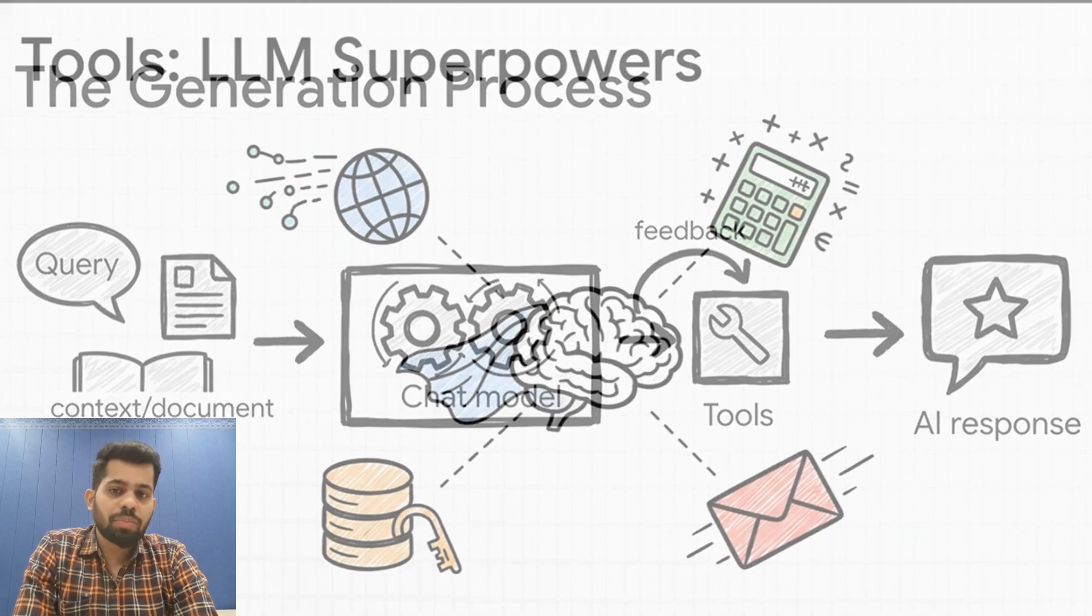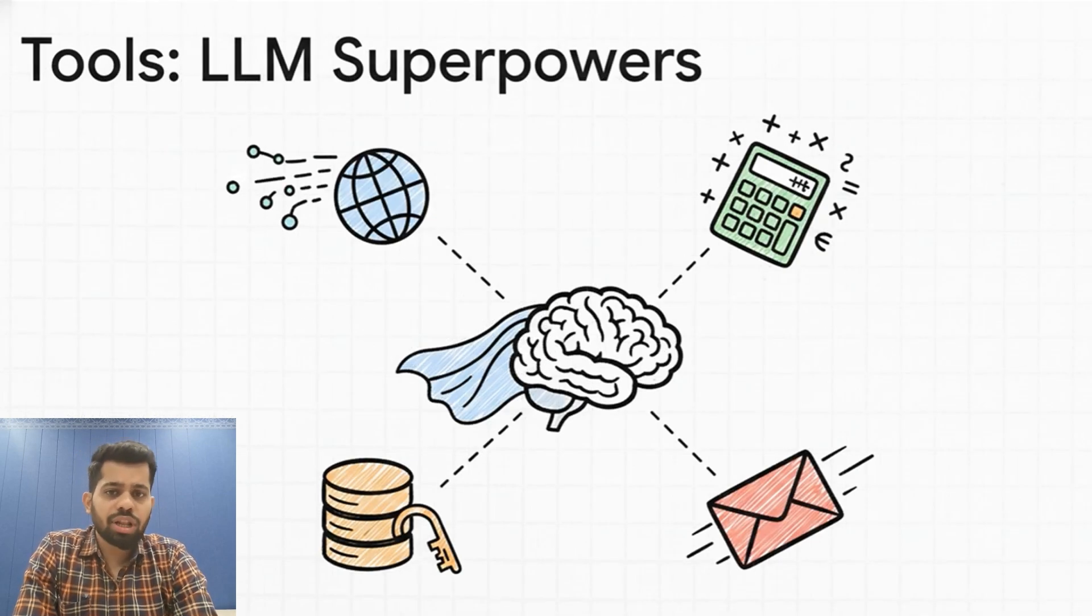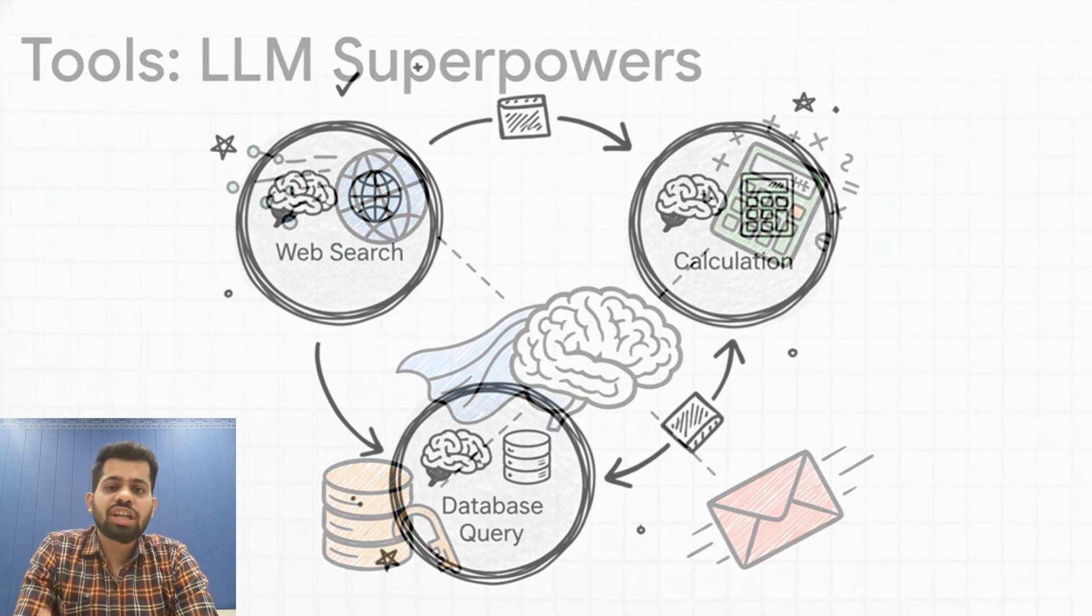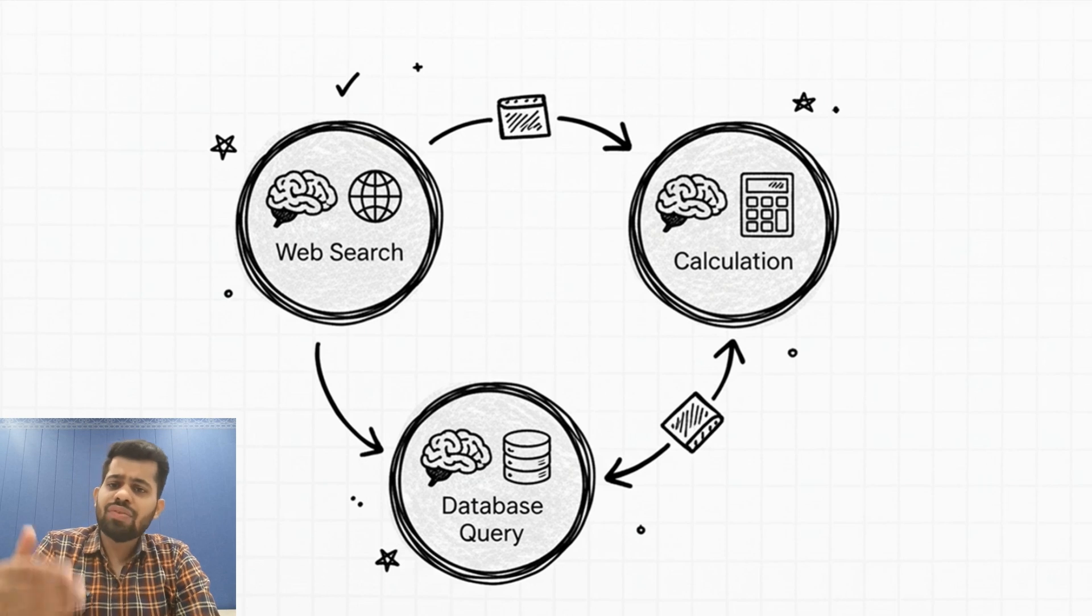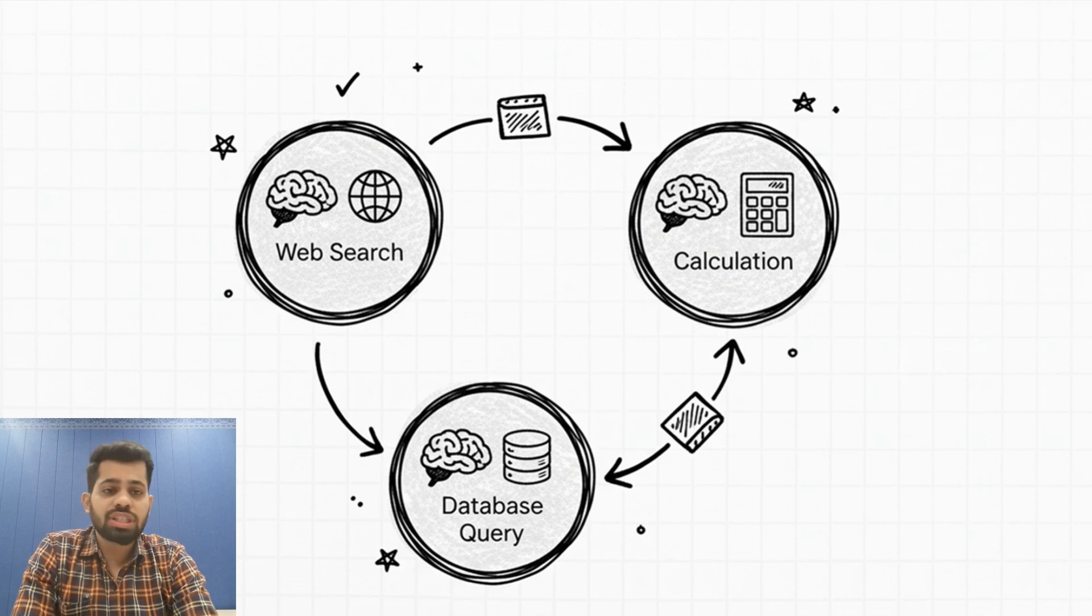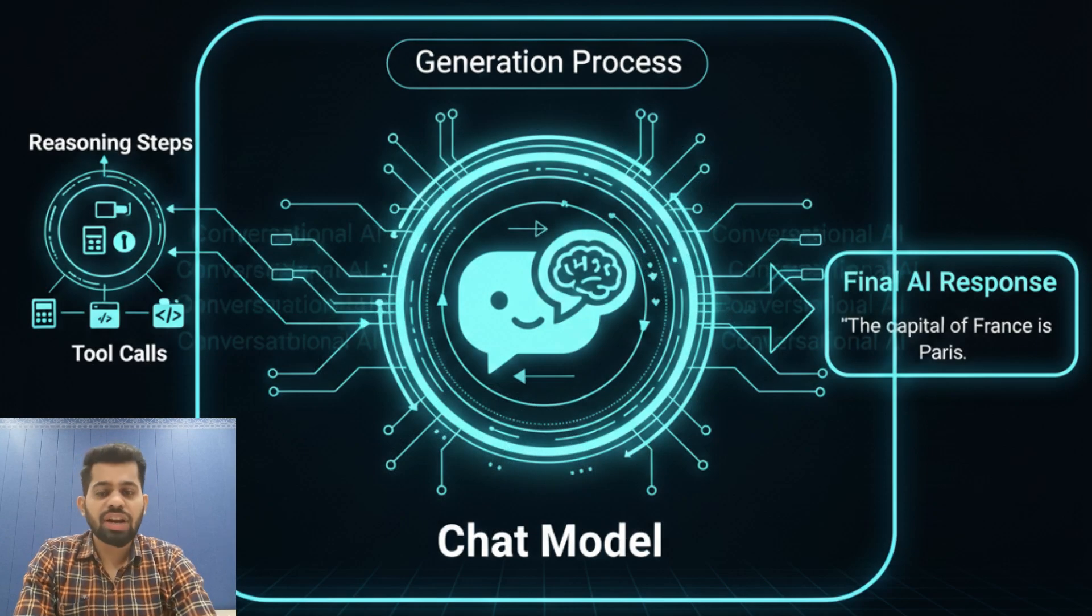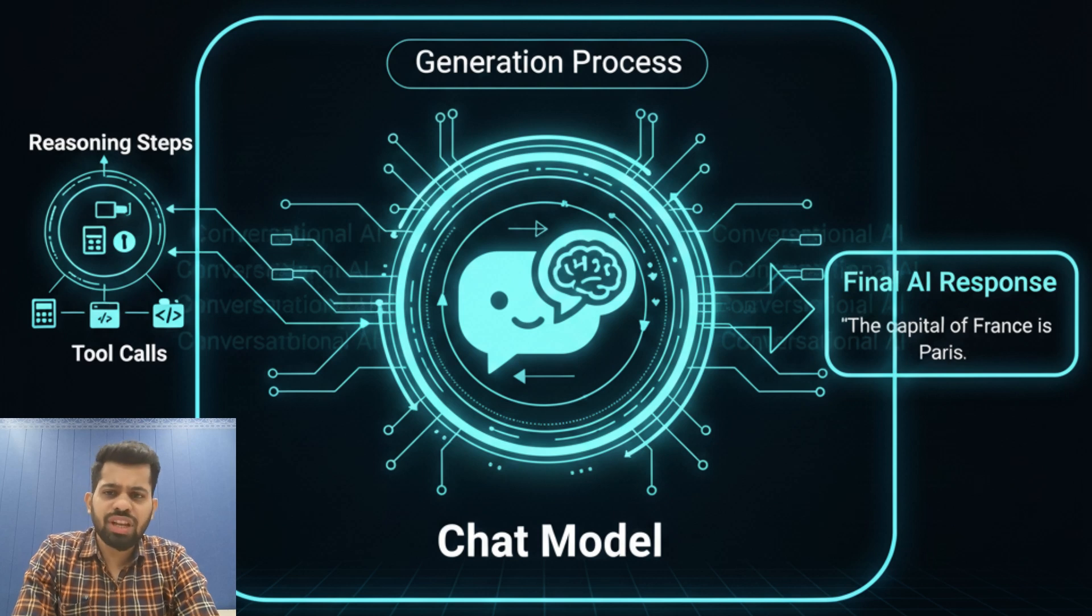And it decides if it can answer directly or if it needs to perform external action. This is where the tools come in. Tools allow the chat models to interface with external systems such as running calculations, executing code, searching the live web, or even sending notifications or emails. If a tool is used, the system receives tool results which are fed back into the chat model. Finally, the model outputs the finished AI response back to the user. This iterative process is what makes agents intelligent. Finally, after potentially multiple tool calls and reasoning steps, the chat model generates the final AI response.